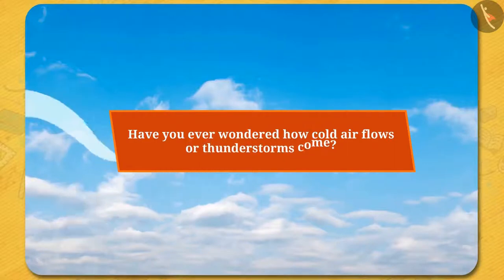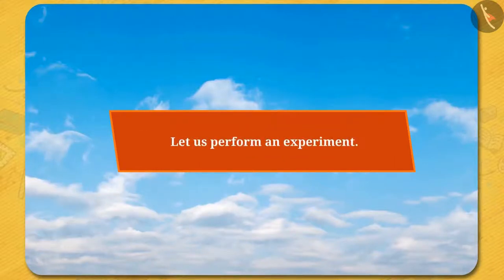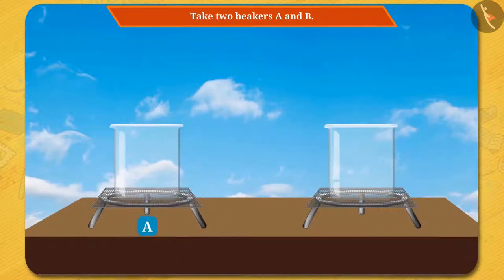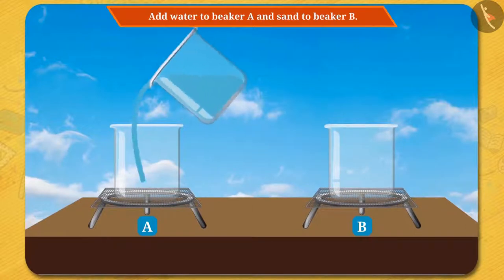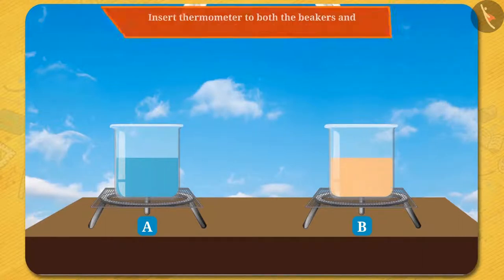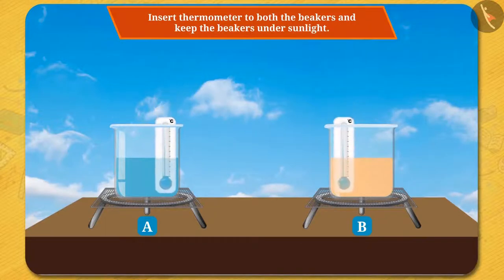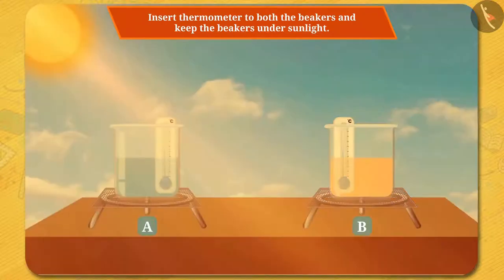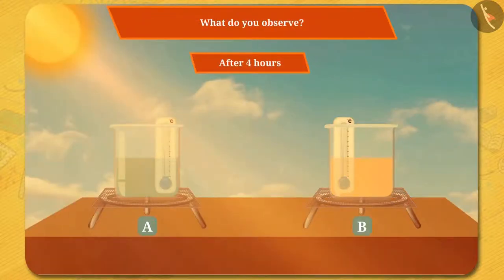Friends, have you ever wondered how cold air flows or thunderstorms come? In order to understand, let us perform an experiment. Take two beakers A and B. Add water to beaker A and sand to beaker B, and after that insert a thermometer into both beakers. Now keep the beakers under sunlight. What do you observe? The temperature in both of the beakers starts rising.